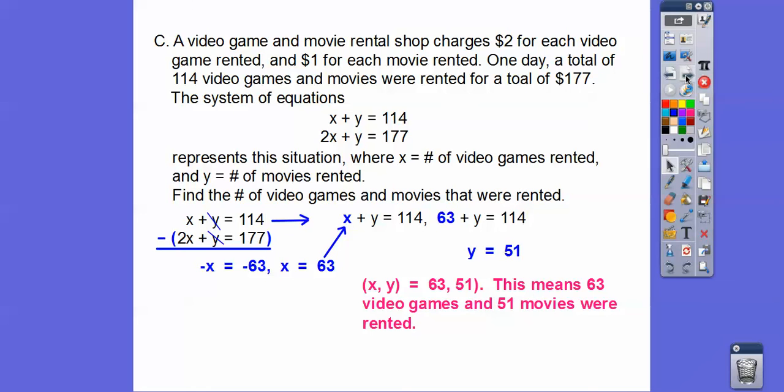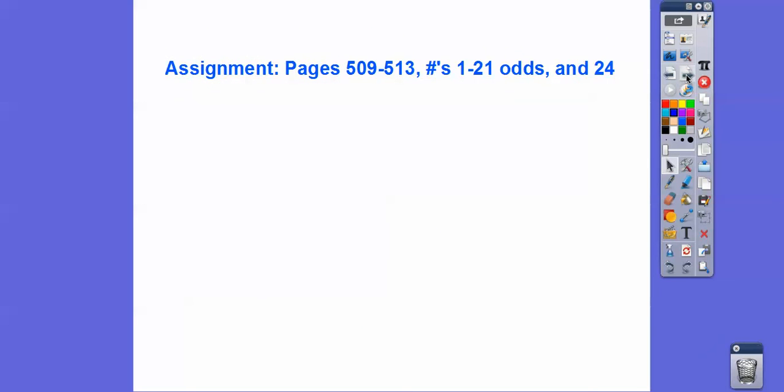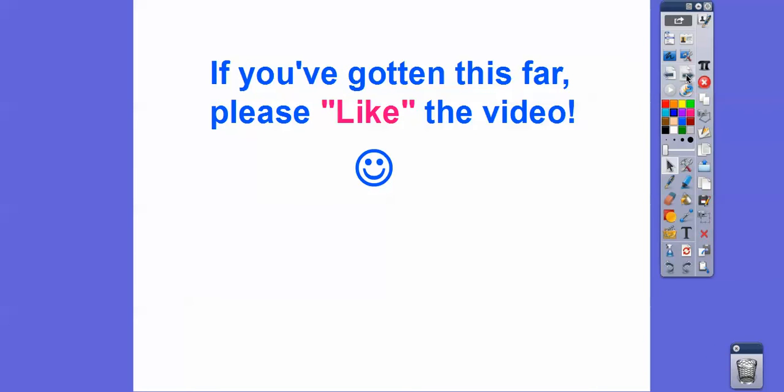Okay, and then go ahead and find Y and we get Y equals 51 right there. Okay, so let's answer the question. Whoops, I forgot a parenthesis right there, but you guys get the idea. So it just means that there's 63 video games and 51 movies that were rented right there. Okay, all right, and if you guys are in my class, I would assign that for your homework right there. And if you guys can, if you've gotten this far, would you guys click like on this video? Thanks a lot, you guys. Take care.